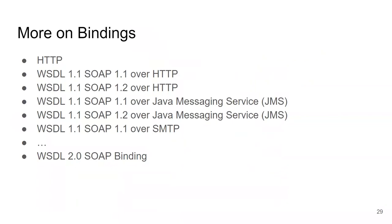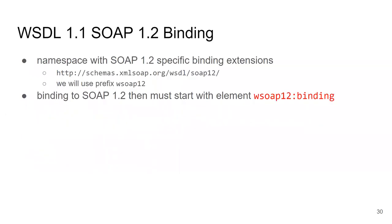Going back to the number of versions of SOAP and WSDL: there are actually specifications for all combinations of versions. Each bullet here is a separate specification — there is a specification for WSDL 1.1 SOAP 1.1 over HTTP binding, WSDL 1.1 SOAP 1.2 over HTTP, specifications for both SOAP versions over Java Messaging Service, and a specification for email communication with a web service. We will also see how WSDL 2.0 handles SOAP bindings.